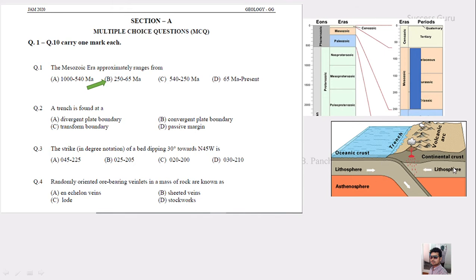In the third question they asked for the strike direction. They gave the dip direction and dip amount, and the answer is in full circle bearing, that is 0 to 360. Let this be the full circle bearing with north, south, east, and west.